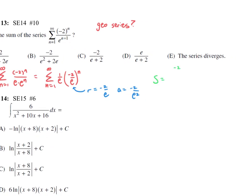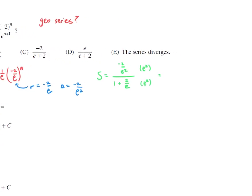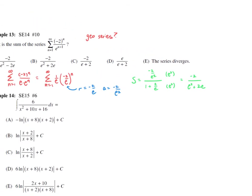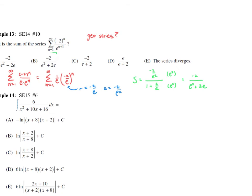Since we know it converges, we can find the sum: a divided by one minus r, which is negative two over e squared divided by one plus two over e. Using a little algebra to simplify this complex fraction — multiply by e squared — we get negative two divided by e squared plus two e. This is the answer: letter B.